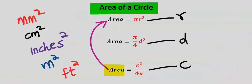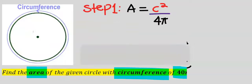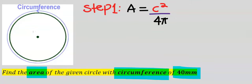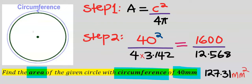Hence we're going to use this formula for the area without needing the radius or diameter. The first step is to write out the formula for the area of the circle with a given circumference. Next, substitute and solve carefully — the area of the circle is 127.31 mm squared to two decimal places and five significant figures.